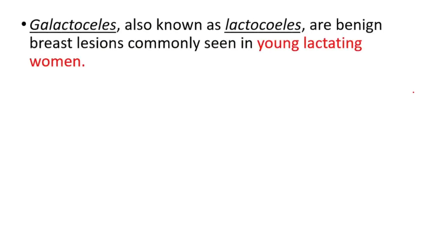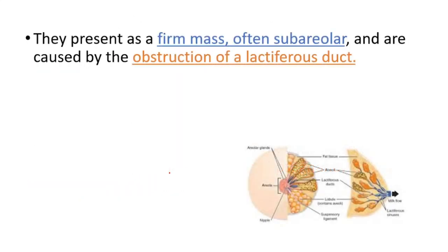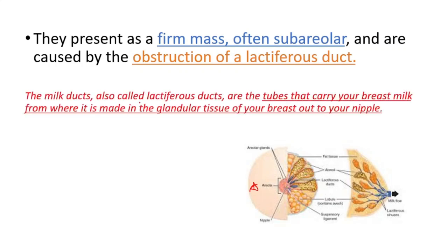This video is going to be about galactoceles. These are benign breast lesions commonly seen in young lactating women. Most commonly, these masses are detected after a woman ceases to breastfeed, but they may also occur any time from the third trimester of pregnancy through the beginning of lactation. They present as a firm mass in the sub-areolar region — here we have an areola, and they will be beneath it. They are caused by obstruction of a lactiferous duct. Lactiferous ducts are milk ducts — the tubes that carry breast milk from the glandular tissue of the breast out to the nipple.